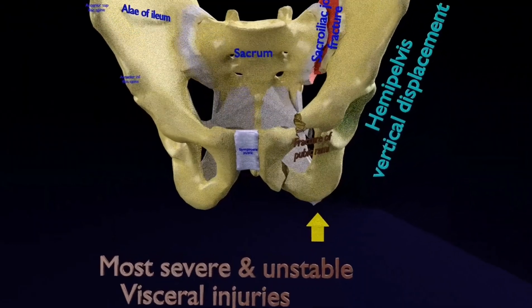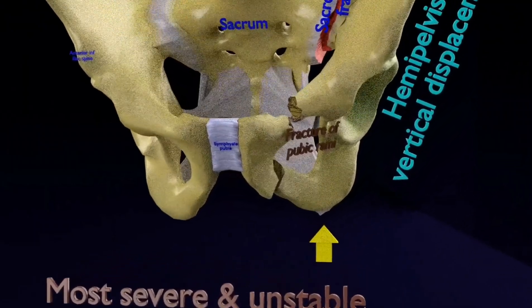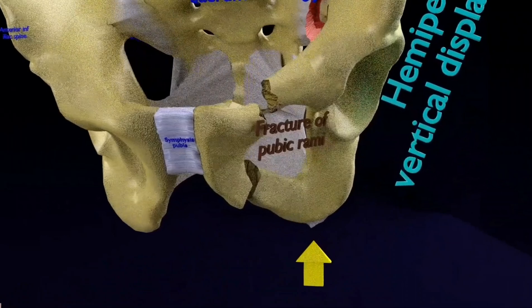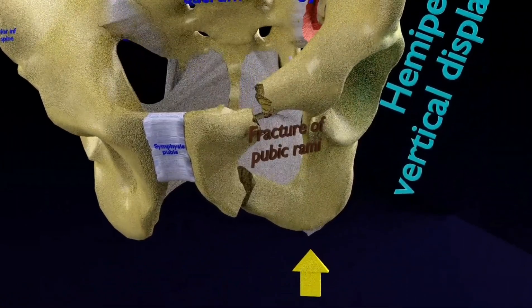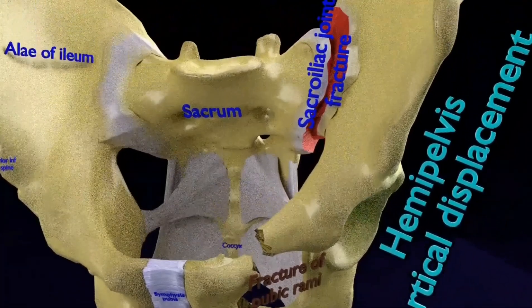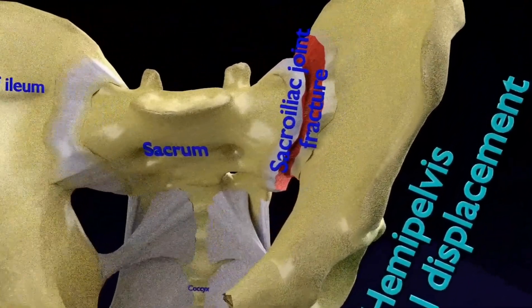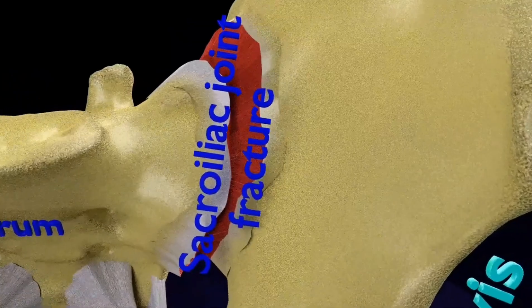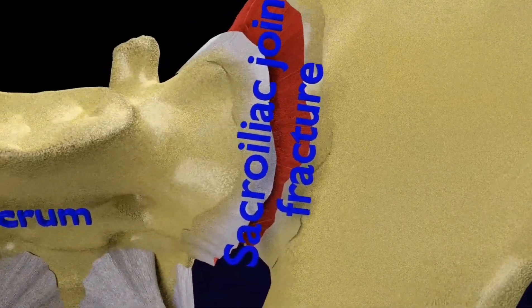Ruptures the sacrotuberous and posterior sacroiliac ligaments, which provide vertical stability to the pelvis. As a result, the lateral fragment, the fracture component containing the acetabulum, is displaced superiorly.